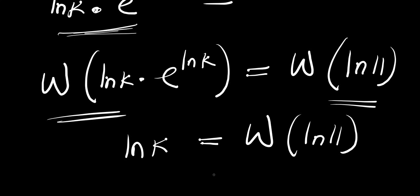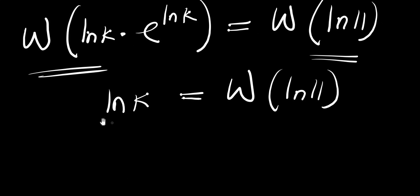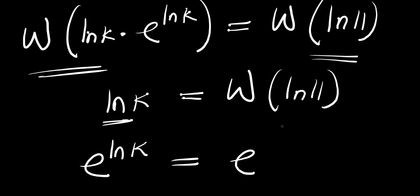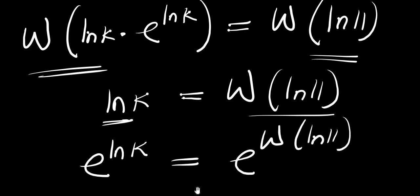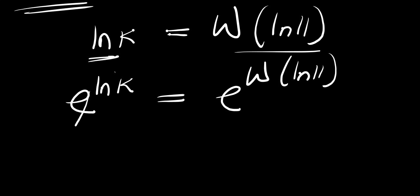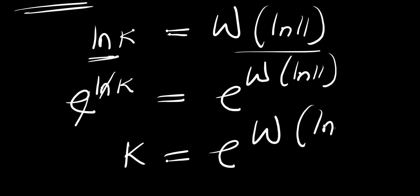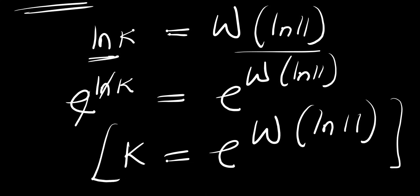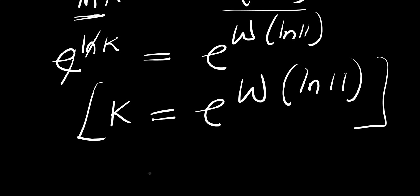Now we are solving for k, so we need to eliminate this ln. The only way to eliminate ln is by introducing e on both sides. Taking e of ln of k on the left eliminates the ln, giving us k equals e raised to the power of the Lambert W function of ln of 11. This is our solution.